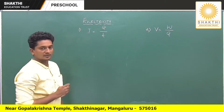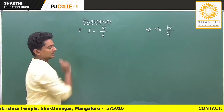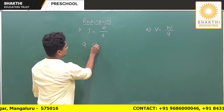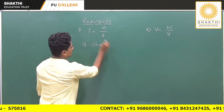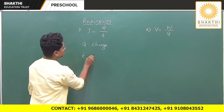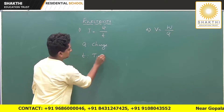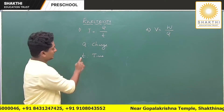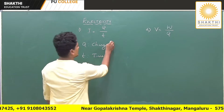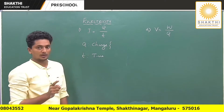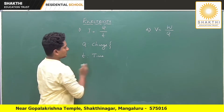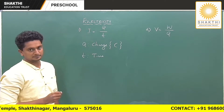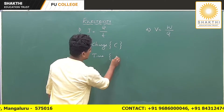Current, written as capital I, is equal to Q by T, where Q is the charge and T is the time. Capital Q is the charge — SI unit is Coulomb, symbol capital C — and small letter T is time — SI unit is second.